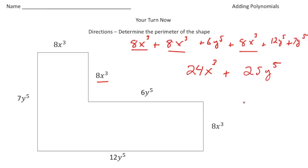Last but not least, I'm going to write it in standard form. So it would be 25y⁵ + 24x³. And that is the expression to determine the perimeter of the shape. All right, how'd you do?